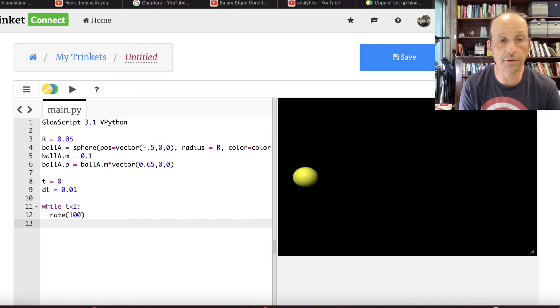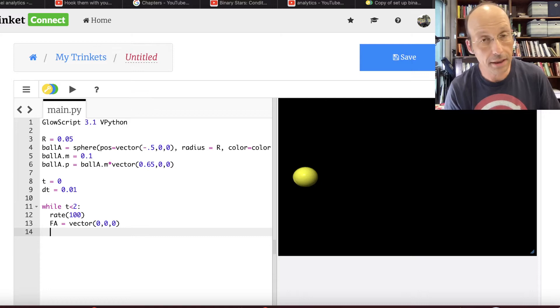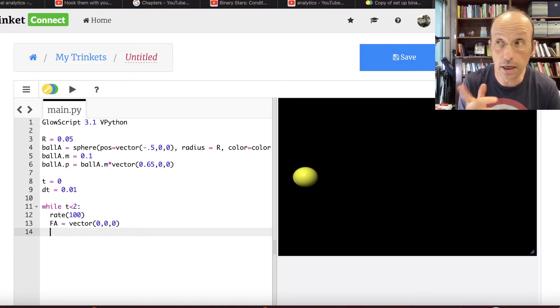So rate tells Python to not do more than 100 calculations per second. That will make this kind of run in real time, but it didn't have to do that. You could do something else. Now the first thing I'm going to do is, I'm going to, this is ball A, so I'm going to say F A equals vector 0, 0, 0. Right, because there's no force on the ball. It's not interacting. It's just moving across the track. There's no forces on it. Now I'm going to update the momentum, which it shouldn't have to do anything because it's moving at a constant speed. But I'm going to do it anyway.